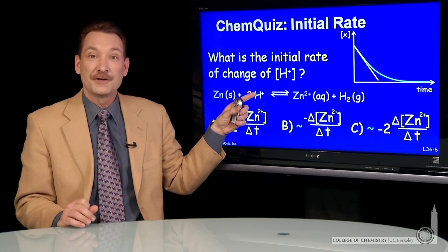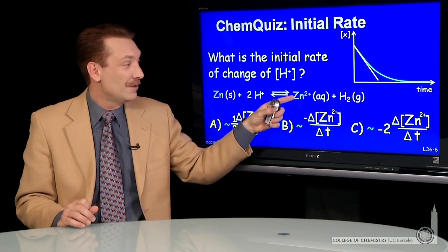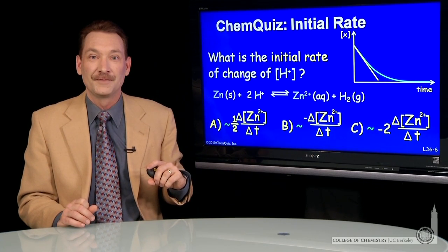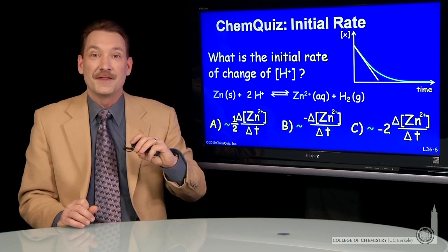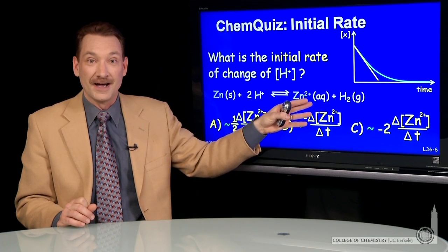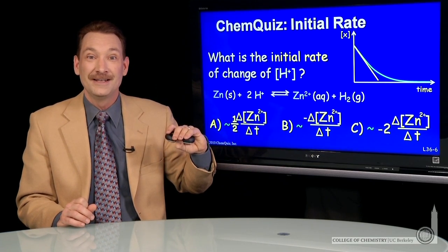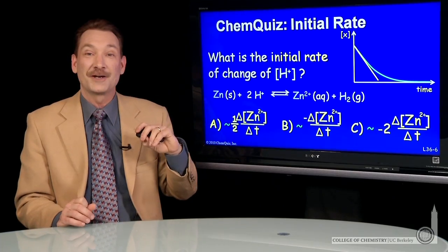That is, two hydrogen ions will be consumed when a zinc ion is produced. So two things will happen. The rates, if I cast it in terms of the zinc ion, should have the opposite sign. And there should be a factor of two.